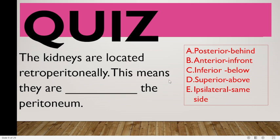We have a quiz. The question reads: the kidneys are located retroperitoneally — this means they are dash the peritoneal. Options: posterior, anterior, inferior, superior, or lateral. The answer is posterior — we said behind the peritoneum, posterior to the peritoneum. Very good.